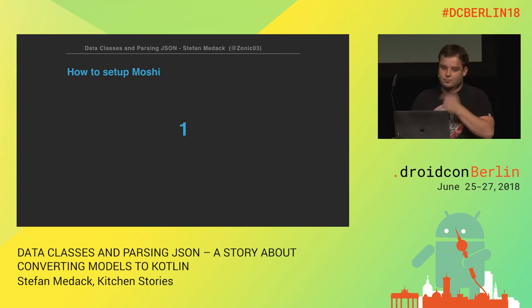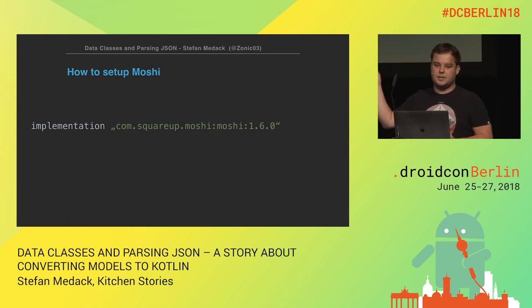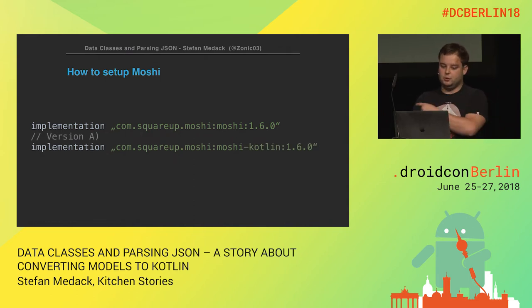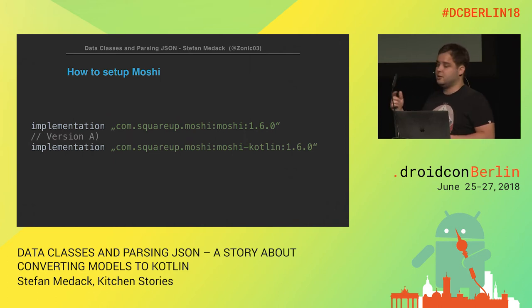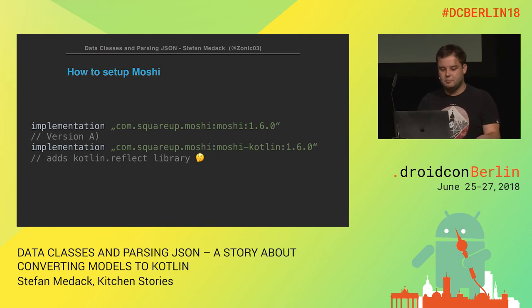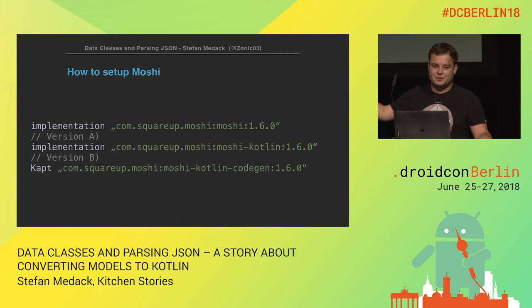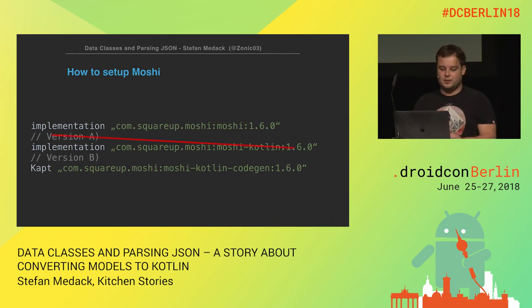Two easy steps. First, add it to your build.gradle — the latest version of Moshi is 1.6. You implement Moshi and right away you can parse Java. If you want to leverage all the Kotlin features, you have two options. Version A adds the Kotlin reflect library bundled in the Moshi Kotlin plugin — a really big library in your small APK. The new version coming with Moshi 1.6 is Kotlin code generation, which generates an adapter for every class at build time. B stands for better — you don't have to ship Kotlin reflect anymore, so let's get version A out of the equation.